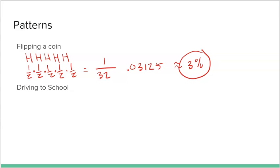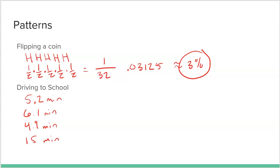Here's another example: driving to school. How long does it take you to drive to school each morning? Each day is different — it varies. Maybe the first day takes you 5.2 minutes, the next day 6.1 minutes, the next day 4.9 minutes, then 15 minutes, then 3.7 minutes. We could just keep recording every single day.